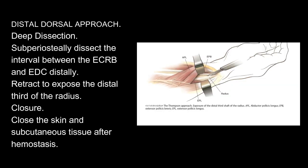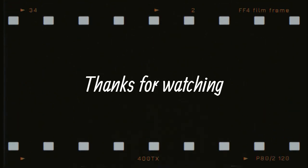Distal dorsal approach, deep dissection: Sub-periosteally dissect the interval between the ECRB and EDC distally. Retract to expose the distal third of the radius. Closure: Close the skin and subcutaneous tissue after hemostasis. Thanks for watching.